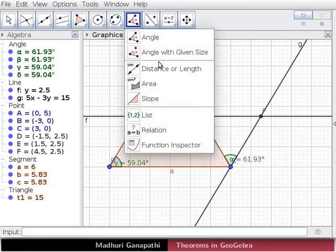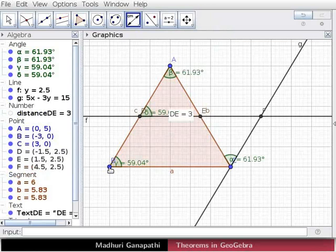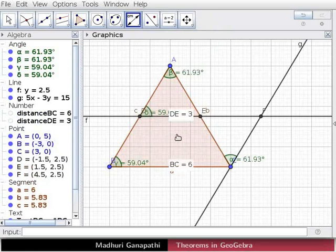Using the distance or length tool, click on the points DE and BC. Notice that DE is half of BC. Hence the midpoint theorem is proved.